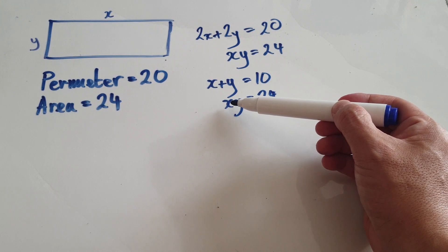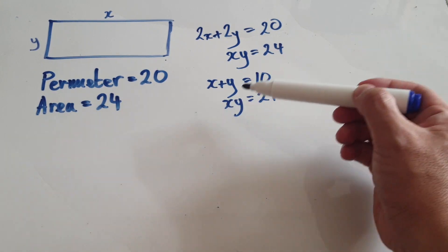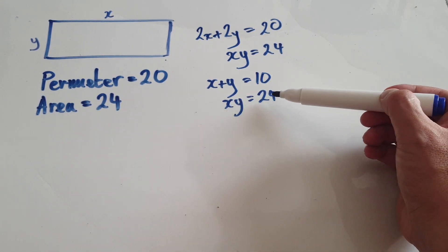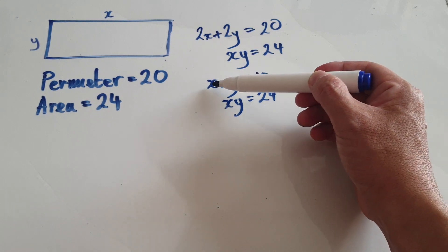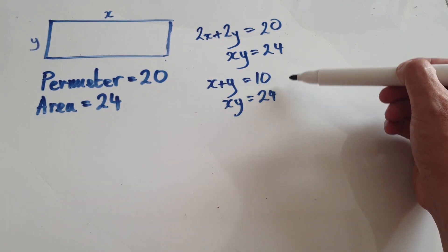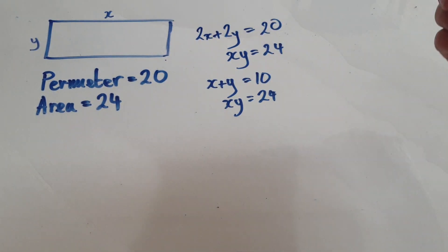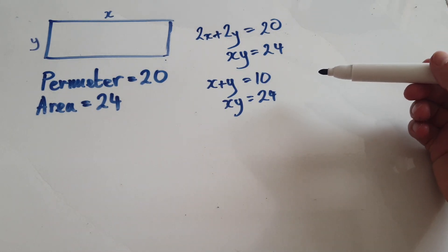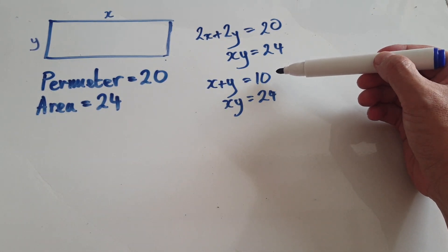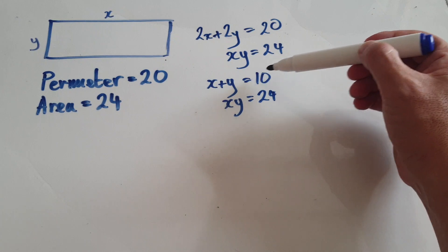So now when you're here, what it's saying is that you have to search for two numbers: when you multiply them together it comes up to 24, when you add them together it comes up to 10. Now you can guess, but remember we're trying to understand the method. The method is more important.